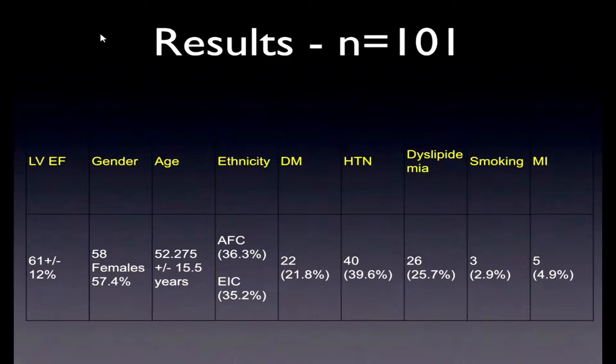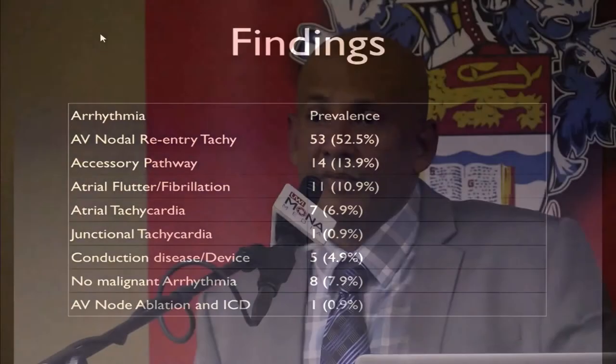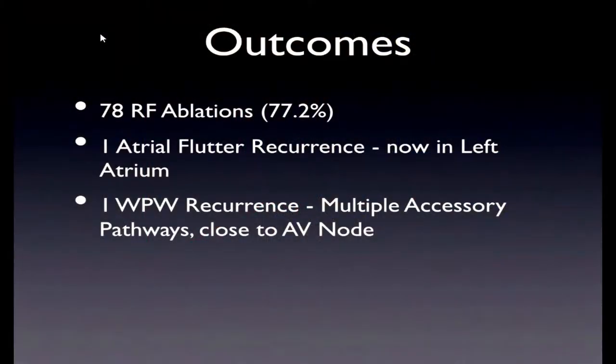AV node reentrant tachycardia was the majority of what we saw, representing over 50 percent of all cases. Accessory pathway represented about 15 percent, flutter and fibrillation about 10 percent, and atrial tachycardia about 7 percent — so the top four essentially took care of over 80 percent of pathology, consistent with worldwide statistics. Just over three-quarters of patients had ablation therapy. There was one atrial flutter recurrence on the left side after we had successfully ablated the right-sided dependent flutter, which has to be treated more like atrial fibrillation.